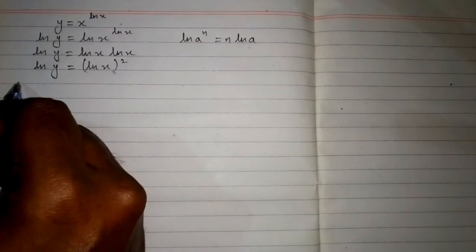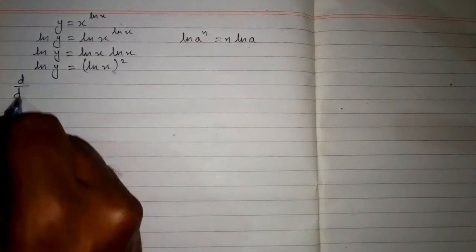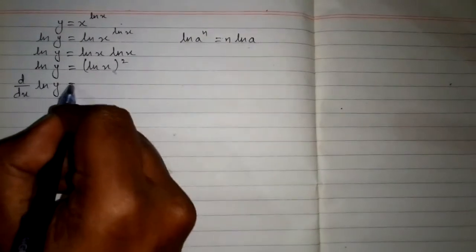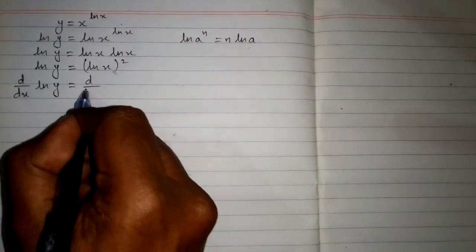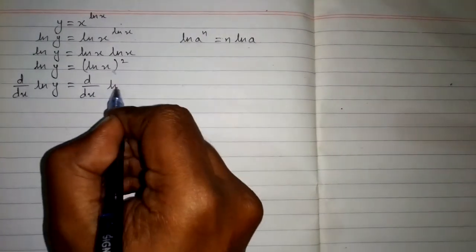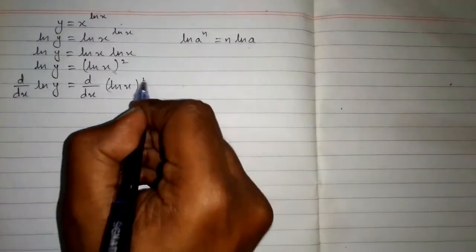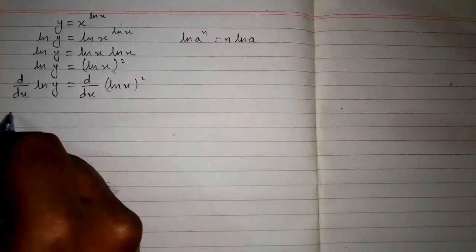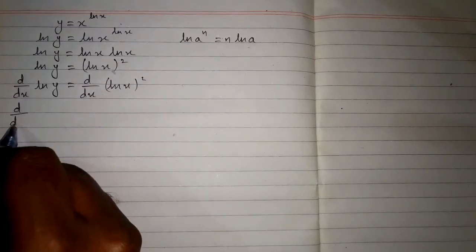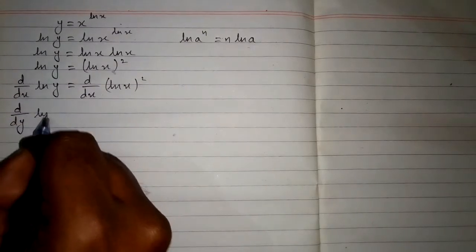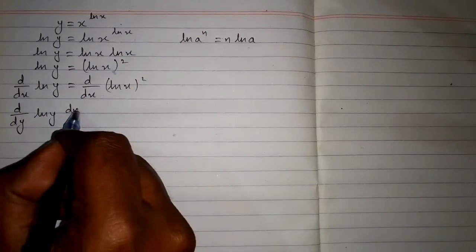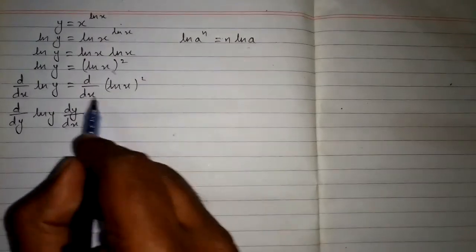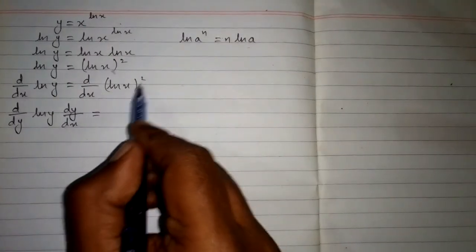Now we will take the derivative of both sides with respect to x. So we have d by dx of ln y is equal to d by dx of (ln x) squared. Now we cannot differentiate ln y directly with respect to x, so we will apply the chain rule: d by dy of ln y times dy by dx is equal to the derivative of (ln x) squared.